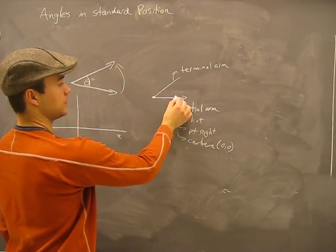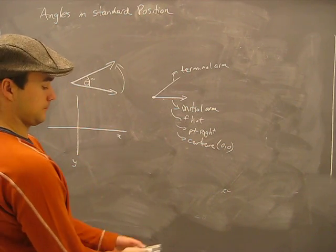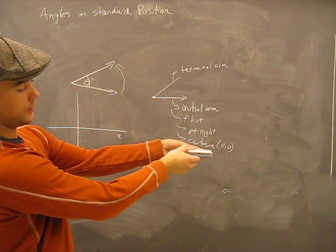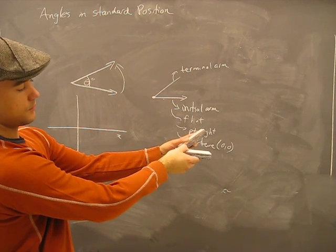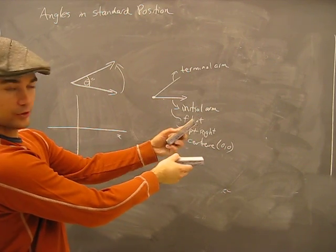What happens then is we take the other arm. It starts behind it like this, and we move, with sound effects. And this, wherever it stops, is called the terminal arm.